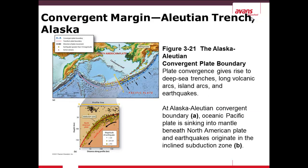When two oceanic plates meet and converge, an example is the Aleutian Trench in Alaska. As shown in figure A, these two plates — the North American plate to the north and the Pacific plate to the south — meet together. Along this plate boundary there are many earthquakes and also a few volcanoes which create islands. Most of these earthquakes happen very deep underground below the ocean floor.